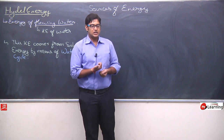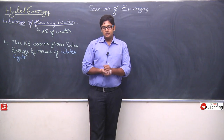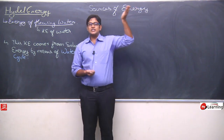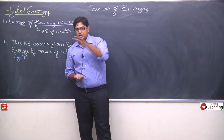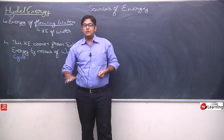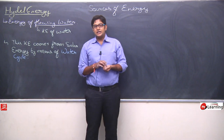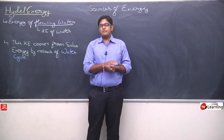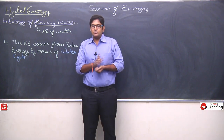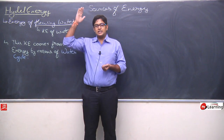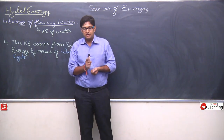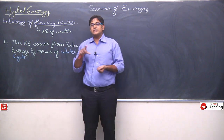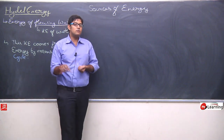जब temperature बढ़ता है और ice melt होती है, वो water के form में convert होती है। हम जानते हैं कि water ऊची height से नीचे की तरफ flow होता है, तो वो potential energy धीरे-धीरे kinetic energy में convert होती है और mountain के उपर से पानी का flow चालू हो जाता है। जैसे कि गंगा river है, जो हिमालय mountain से flow होती है — यह इसीलिए होता है।